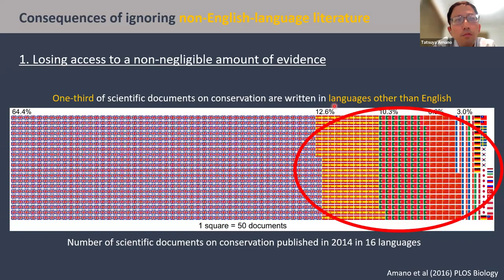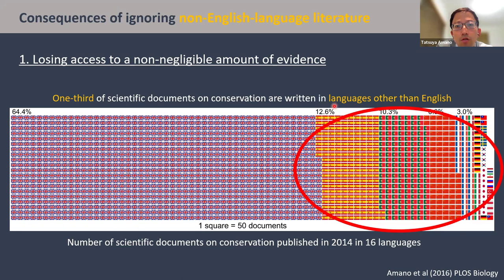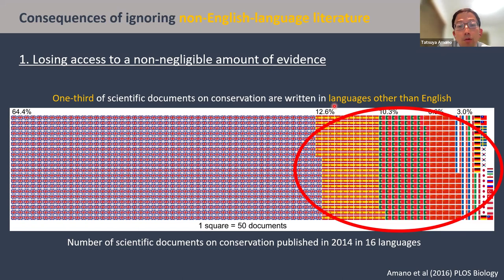Let me first briefly explain why we can't ignore non-English language literature in meta-research studies. Our research showed that there are two major consequences of ignoring non-English language literature in the synthesis of evidence globally. First, by ignoring non-English language literature we could be losing access to a non-negligible amount of scientific evidence.